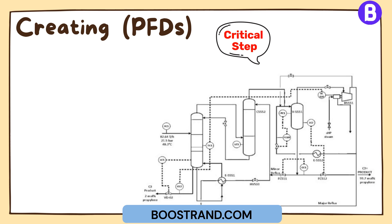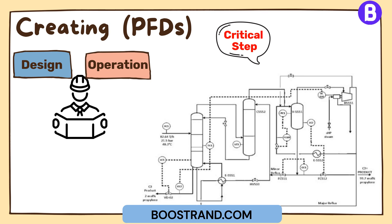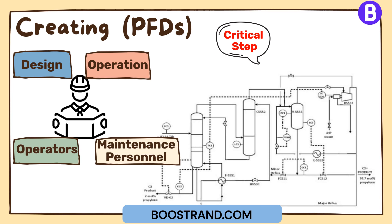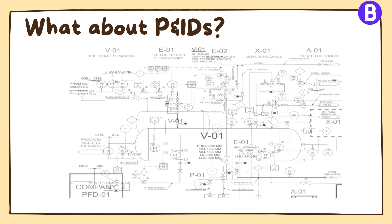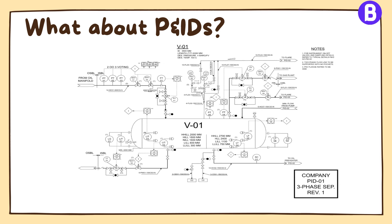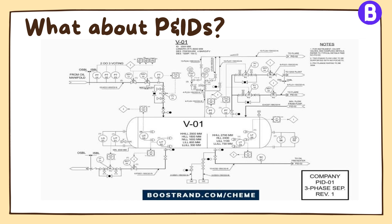The creation of PFDs is a critical step in the project, especially during early project phases, as it enables process engineers to communicate the process design and operation to other engineering disciplines and stakeholders, such as operators, maintenance personnel, and management. PFDs also serve as a basis for developing piping and instrumentation diagrams, P&IDs, which provide a detailed representation of the plant's equipment and instrumentation, based on which other discipline activities are carried out.